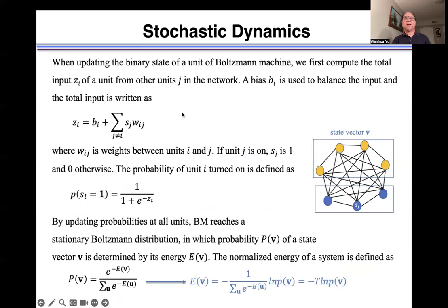When updating the binary state of a unit of a Boltzmann machine, we first compute the total input zi of unit i from other units j in the network. Bias bi is used to balance the input, and the total input is written as sum of bias plus weighted sum over all other units j.